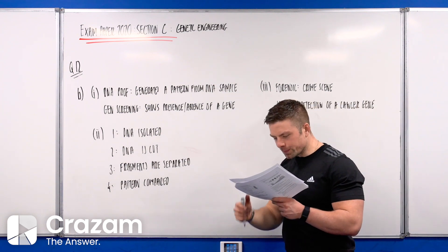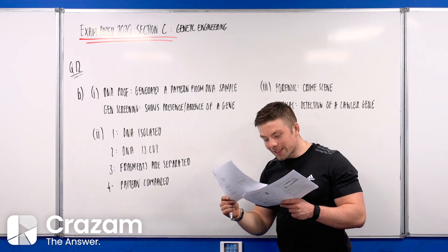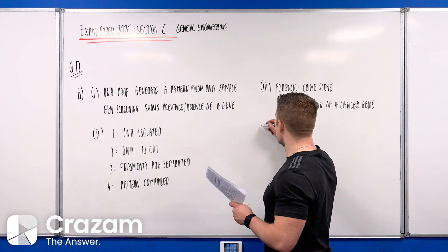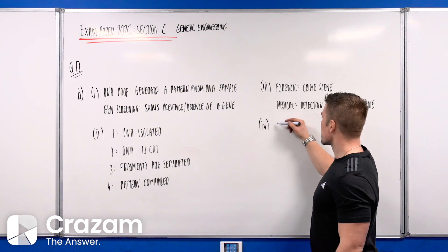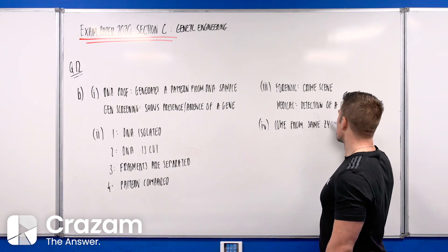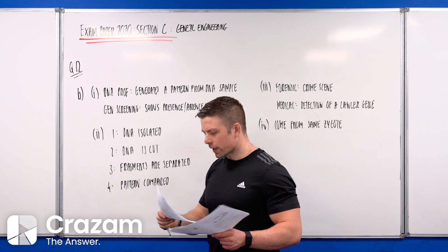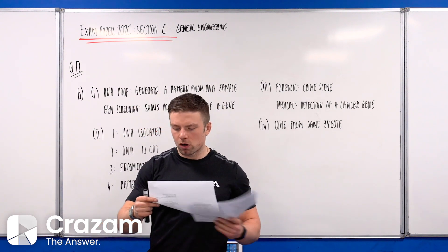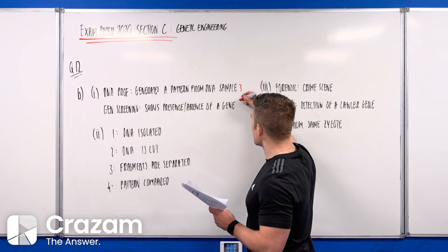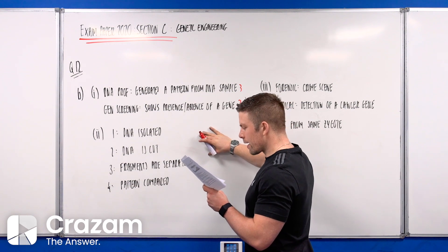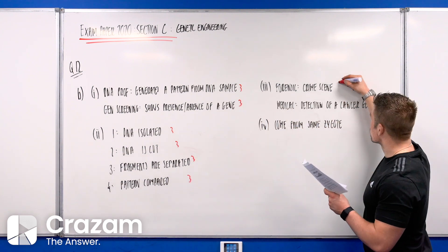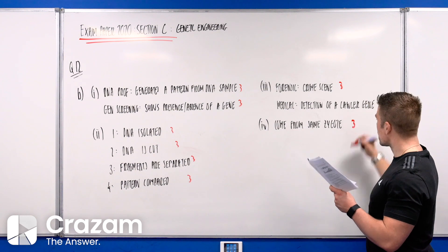Part 4 says identical twins have the same DNA profile. Explain why this is so. You can say they come from the same zygote. In terms of marks for this, 27 overall - three marks for everything here on the board, so three and three for each one, bringing us up to 18, 21, 24, and 27 marks for question 12b.